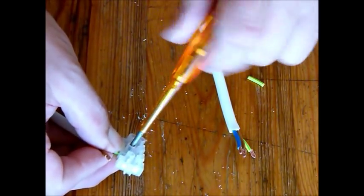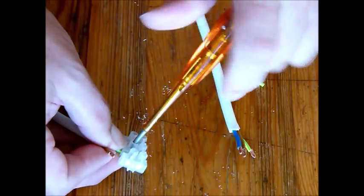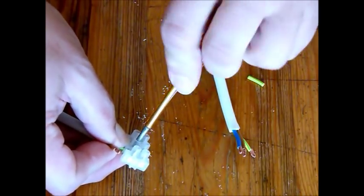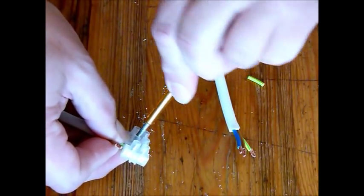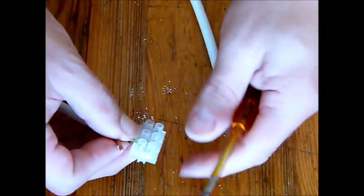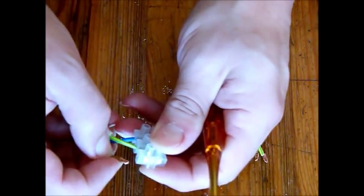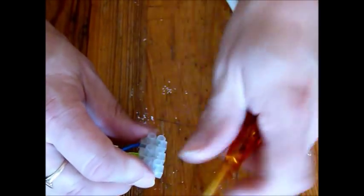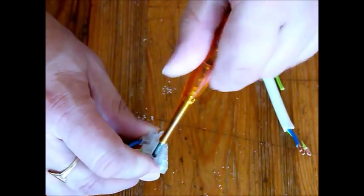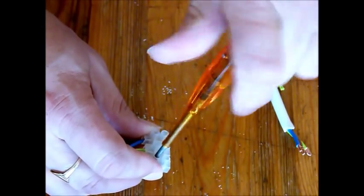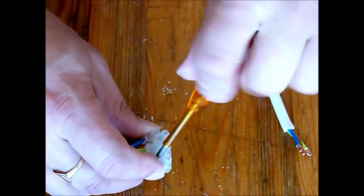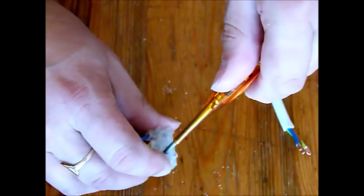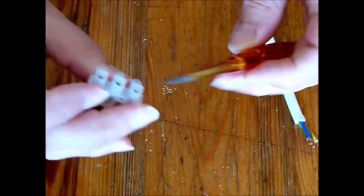So that's now the earth in the center. We just tighten down the screw on that. And then finally, we put the live on the far side. So that's the three on that side. And then we do exactly the same thing on the other side.